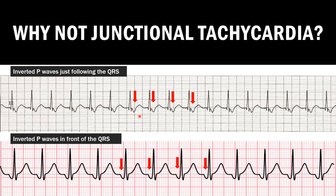Although junctional tachycardia is usually shown as a short RP tachycardia — because the P wave falls just after the QRS complex — it could also be long RP if the focus is more atrial in origin. In both cases, you will see a negative P wave in junctional tachycardia. Since the EKG given does not show negative P waves, it is not junctional tachycardia.